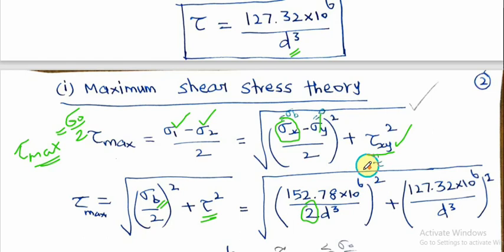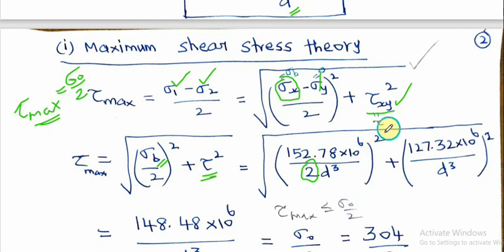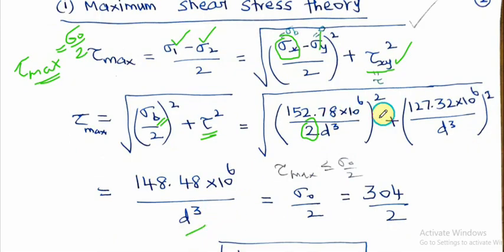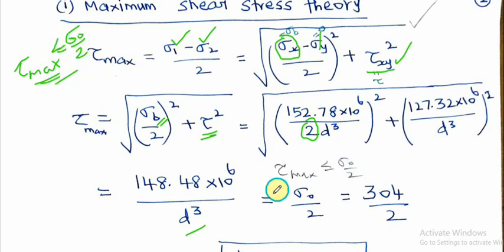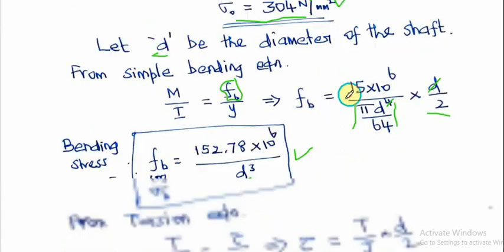Simplifying the expression, τ_max comes out to 148.48×10⁶/d³. Applying the condition τ_max ≤ σ₀/2, with σ₀ = 304 MPa giving σ₀/2 = 152 MPa, we set 148.48×10⁶/d³ = 152. Solving for d³ and taking the cube root (power 1/3), we get d = 99.22 mm.